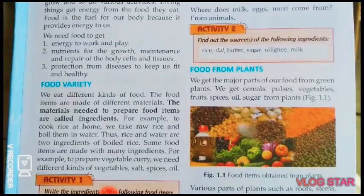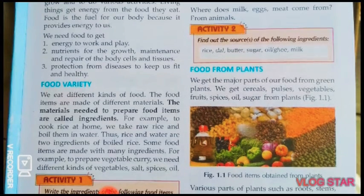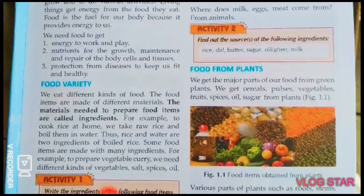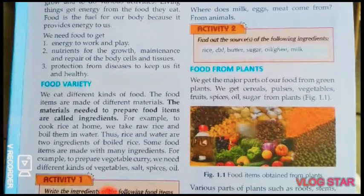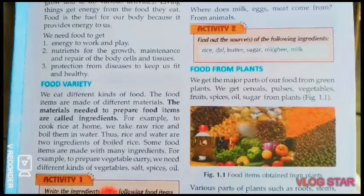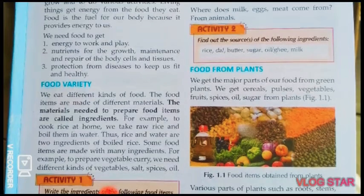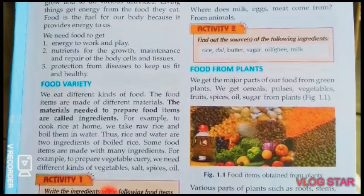हम विभिन्न प्रकार के food items खाते हैं जो विभिन्न materials से बने होते हैं। Food items तैयार करने के लिए जो material इस्तेमाल किया जाता है उसे ingredients कहा जाता है। जैसे चावल पकाने के लिए हमें पानी और कच्चे चावल चाहिए। इस प्रकार चावल और पानी उबले हुए चावल के दो ingredients हैं।